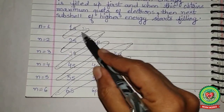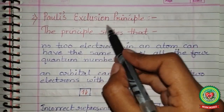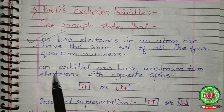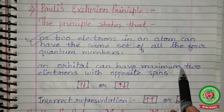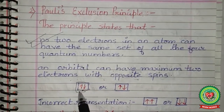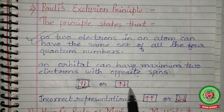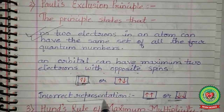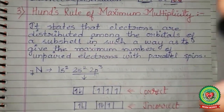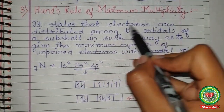According to Pauli's exclusion principle, an orbital can have a maximum of two electrons with opposite spin. An orbital drawn as a box can contain two electrons shown with opposite arrows — either up-down or down-up — but never two arrows in the same direction, which would be an incorrect representation.